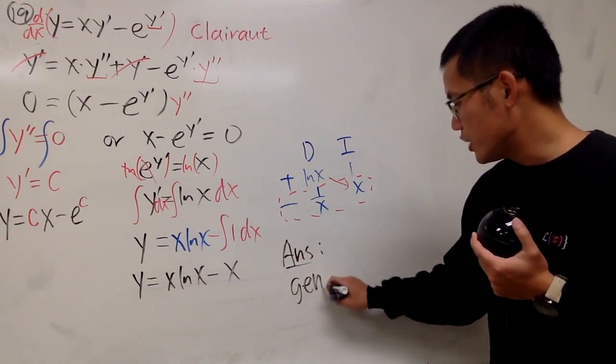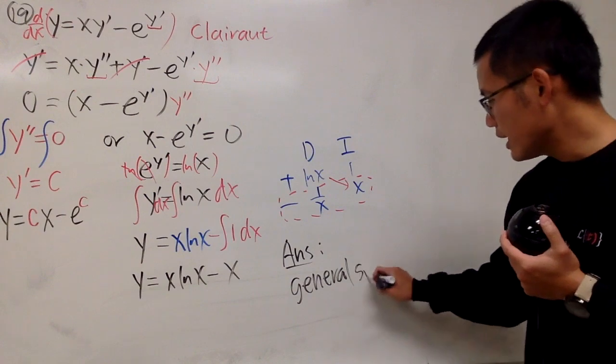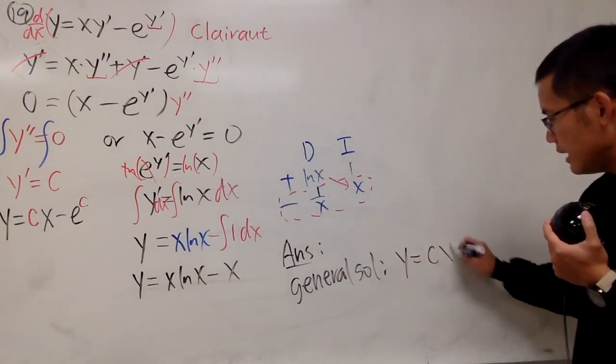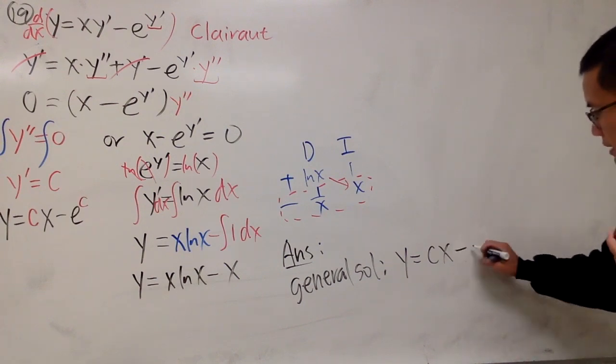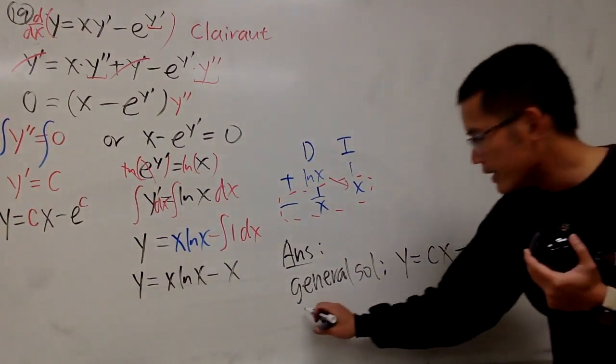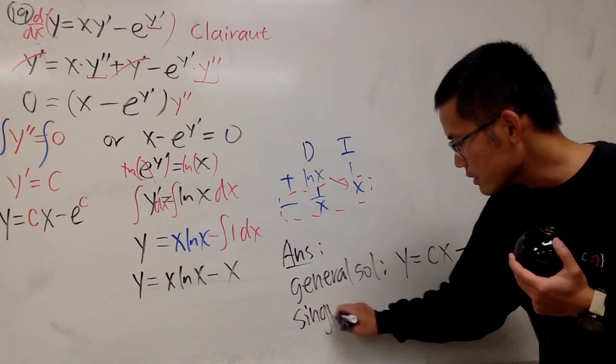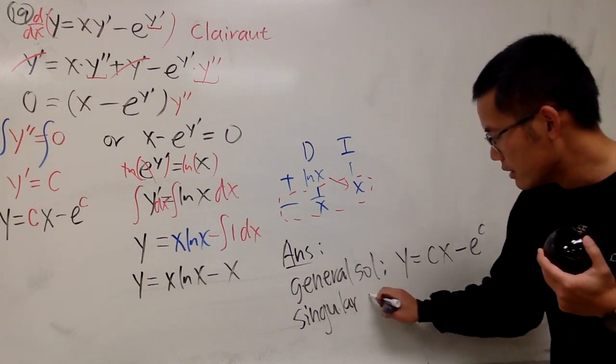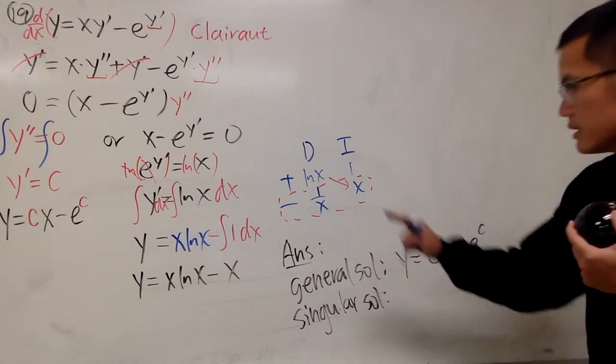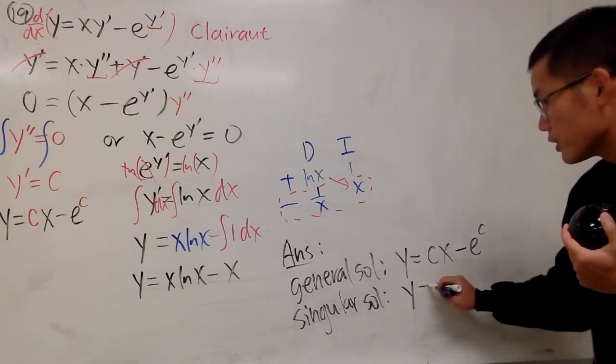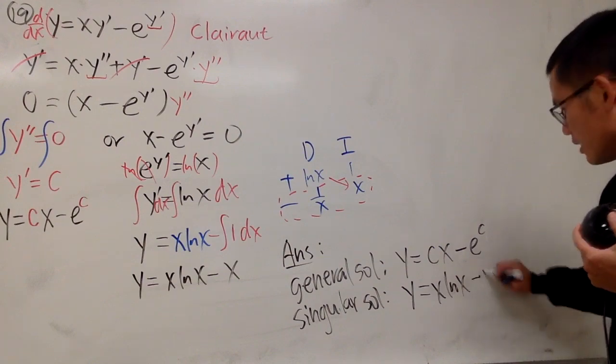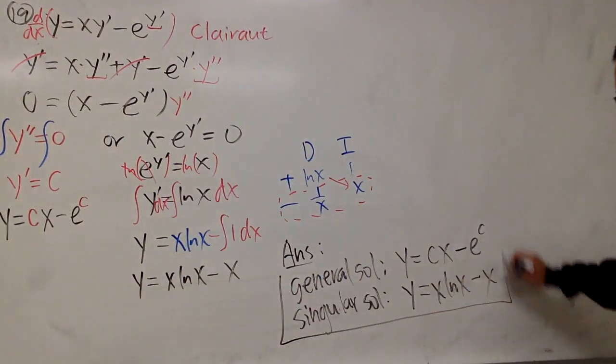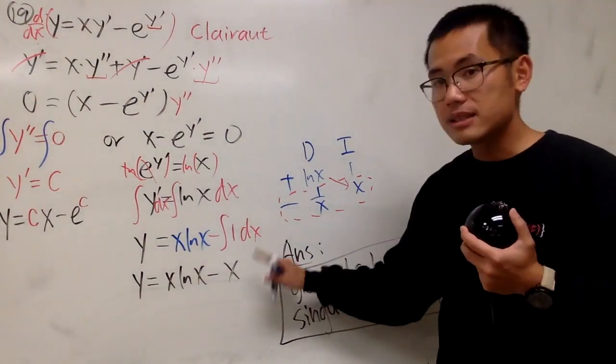Here is the answer. This is how you answer it. You write it down. The general solution is that y equals cx minus e to the c's power.